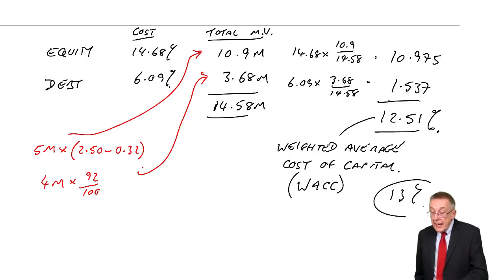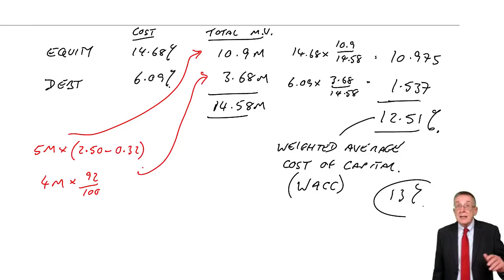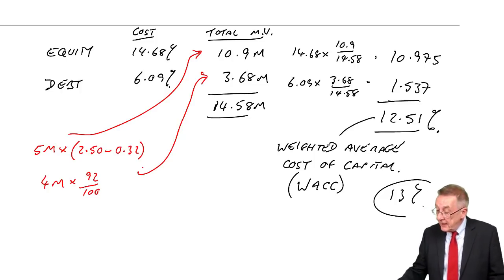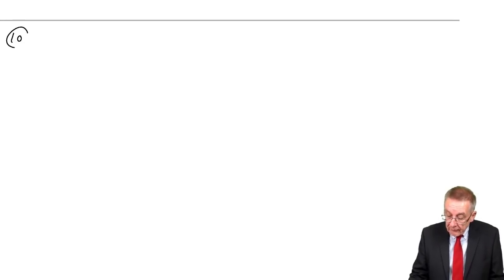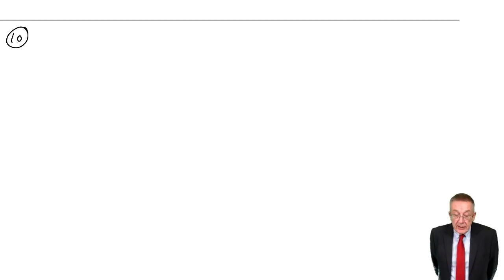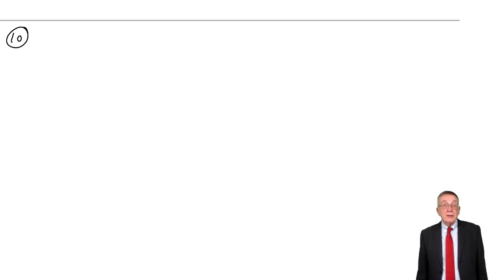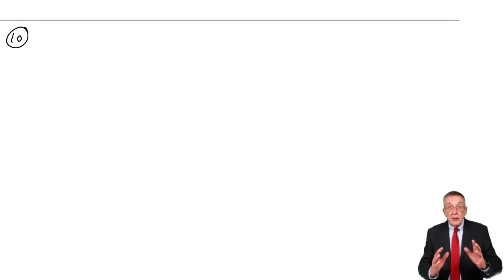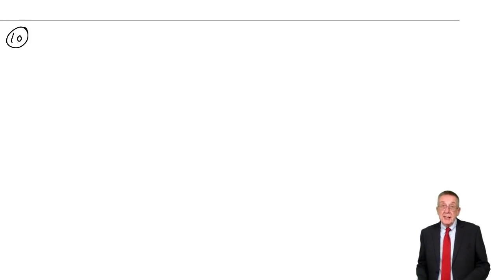You must make sure you can calculate it. Example 9 was relatively easy because it was shares with a constant dividend and irredeemable debt. Example 10 brings in the extra bits. In example 10, the dividend has growth at 8%, the debt is redeemable, so we have to calculate the IRR. I really suggest you have a go at number 10 on your own. I've shown you how we get the cost of equity, how we get the cost of debt. Have a go on your own, then watch the rest of this lecture.